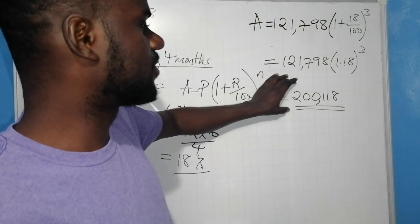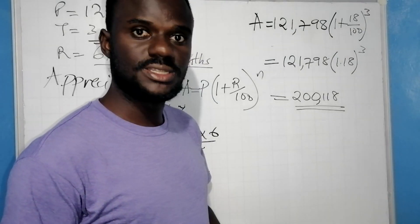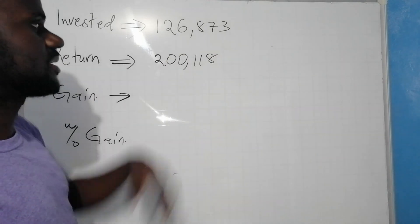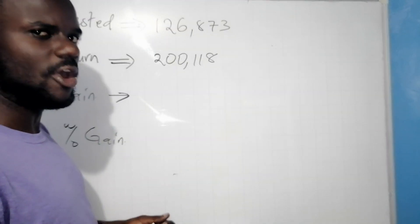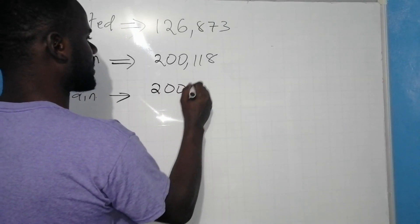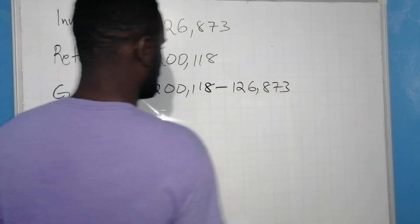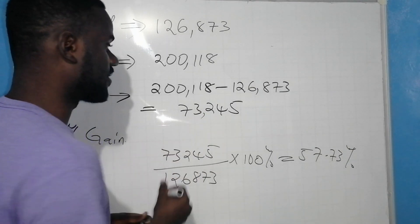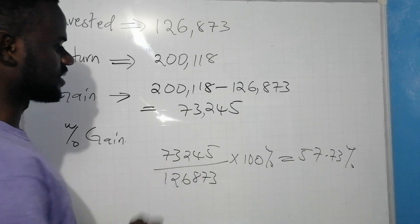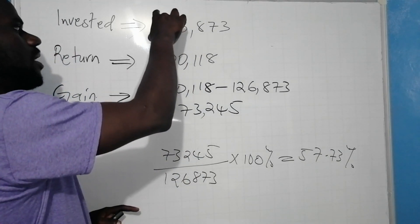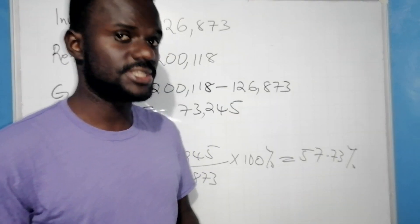By the end of 3 years, the amount in the shares will be 200,118 shillings. She originally invested 126,873 shillings, and finally has 200,118 shillings. The gain is: 200,118 − 126,873 = 73,245 shillings. In calculating the percentage gain, you take the gain of 73,245, divided by the amount she invested in the shares of 126,873, multiplied by 100%. That will give you the percentage gain.